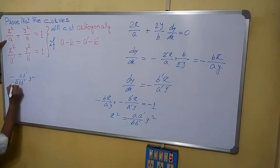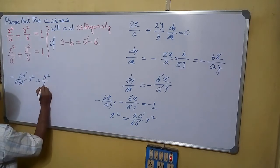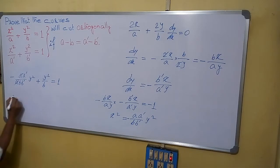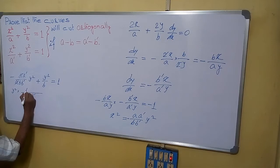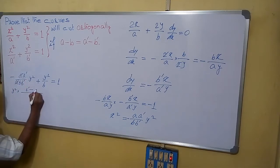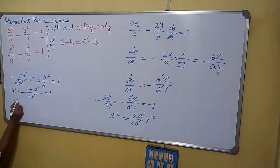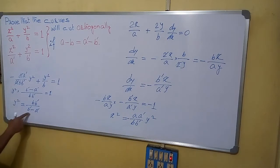We can write A here. Plus y squared by B equals to 1. We can cancel A and B. So we can write y squared into B dash minus A dash equals to 1, or y squared equals to B B dash by B dash minus A dash.